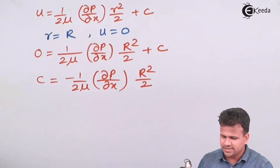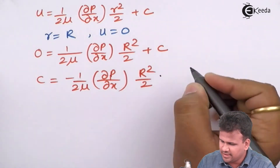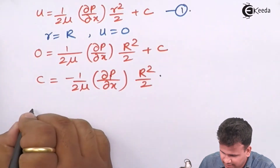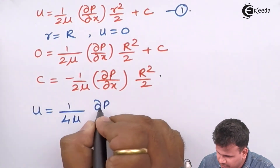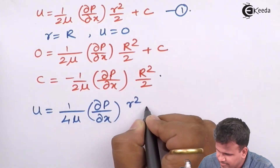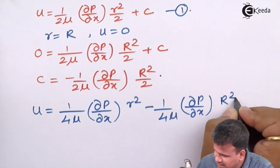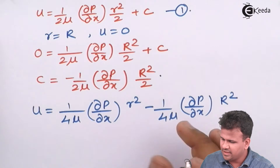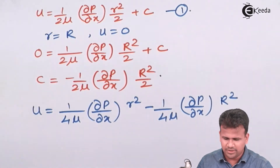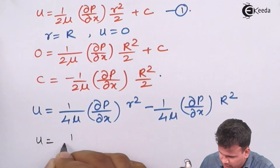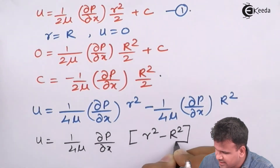Therefore, C equals minus (1/(2mu)) times (∂p/∂x) times R²/2. Substituting this value of C back into the equation and simplifying, we obtain: u equals (1/(4mu)) times (∂p/∂x) times (R² minus r²). Wait — taking the common factor (1/(4mu))(∂p/∂x) out: u equals (1/(4mu)) times (∂p/∂x) times (r² minus R²).